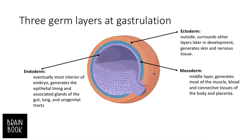The mesoderm also forms the placenta so the embryo can get nutrients from the mother's body. The third and innermost layer, the endoderm, generates the epithelial lining and associated glands of the gut, lungs, and urogenital tracts.